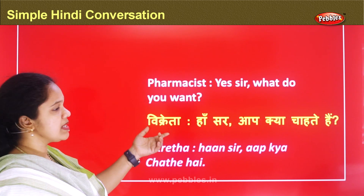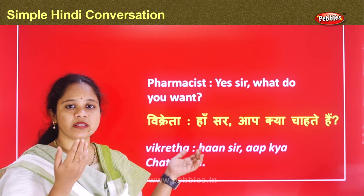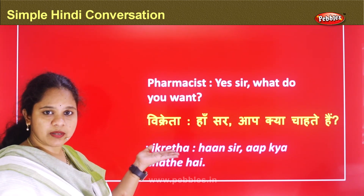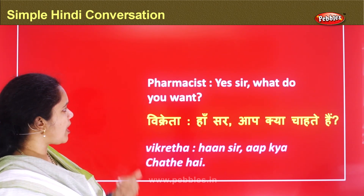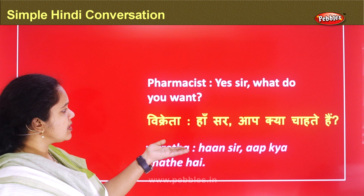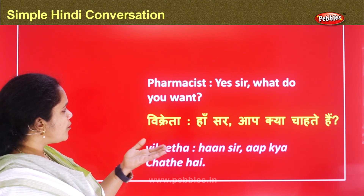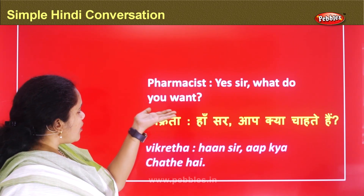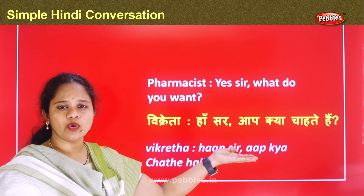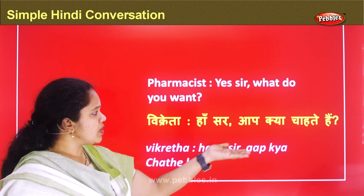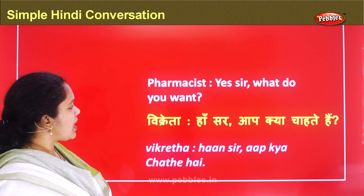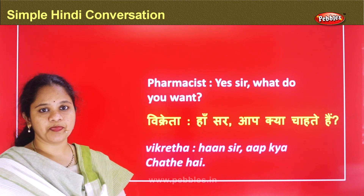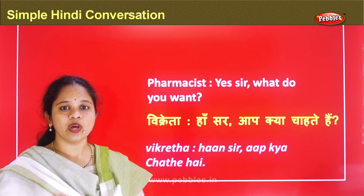The main word here is vikreta, which means seller. Since this conversation is at the medical shop, the pharmacist is the vikreta — he is the one giving the medicines. He says 'Haan sir, aap kya chahate hain?' Kya means 'what', aap means 'you', and chahate hain means 'do you want'. So 'Yes sir, what do you want?' is 'Haan sir, aap kya chahate hain?'